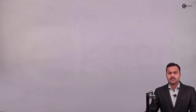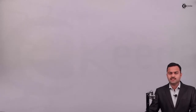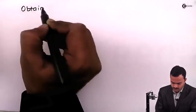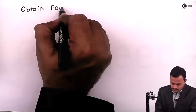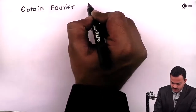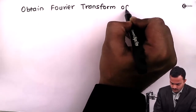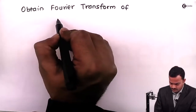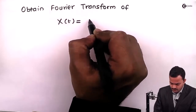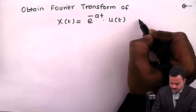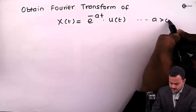Hi students, in this video we are going to see a problem based on continuous time Fourier transform. The problem is to obtain the Fourier transform of x(t) = e raised to minus at, times u(t), where a is greater than 0.